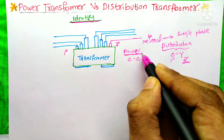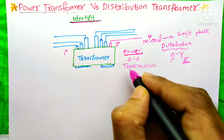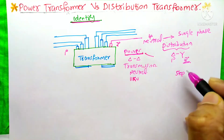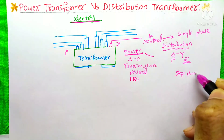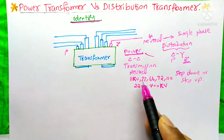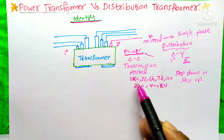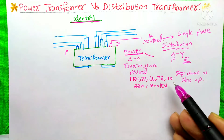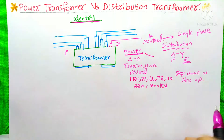The power transformer is used only for transmission purposes, so there is no need for a neutral conductor. The power transformer may be step-down or step-up. Generally, the voltages handled by power transformers are 11 kV, 33, 66, 70, 110, 220, and 400 kV.